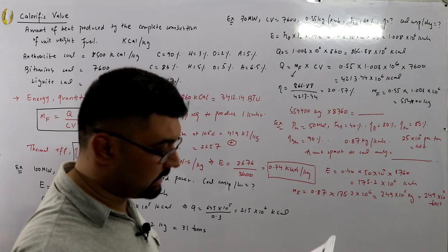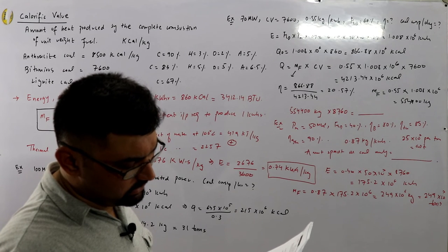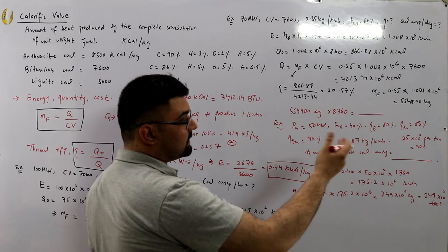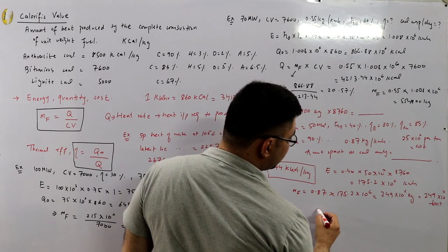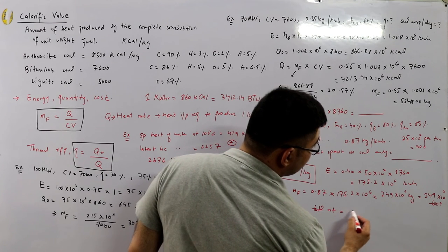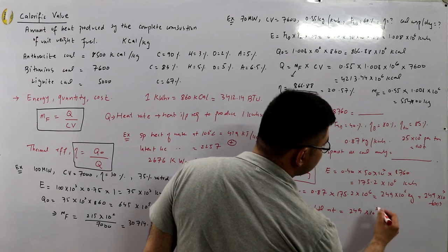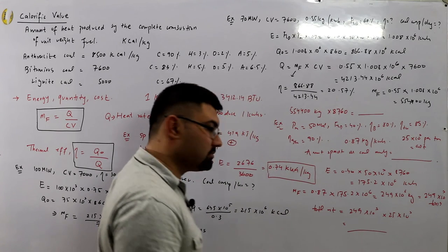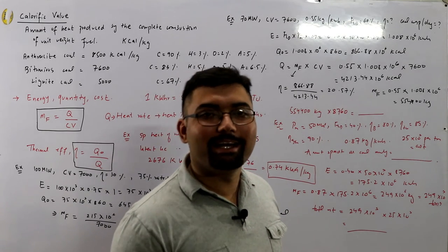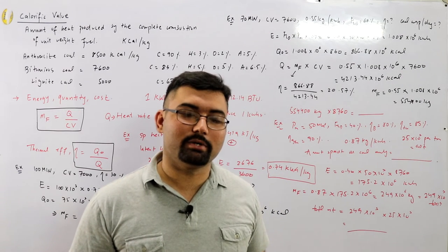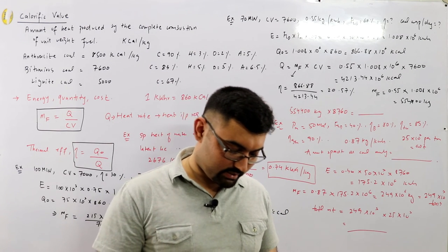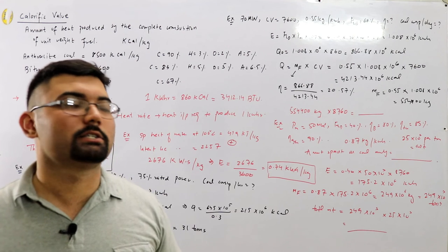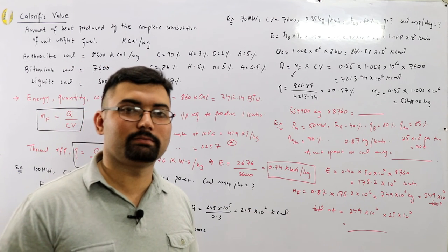The mass of fuel required is 249×10³ tons. Total cost = 249×10³ tons × 25×10³ per ton, giving a huge total — a very large amount spent annually on fuel for this power station.